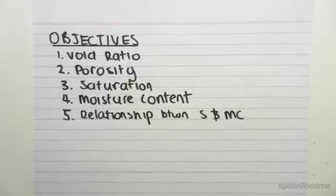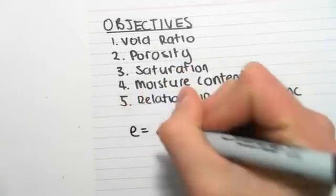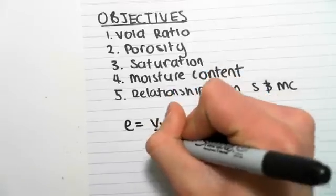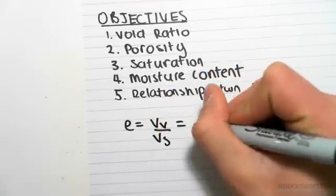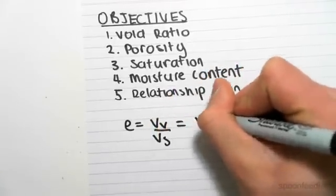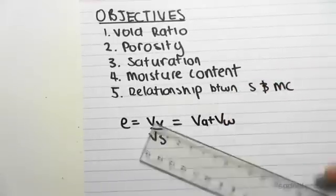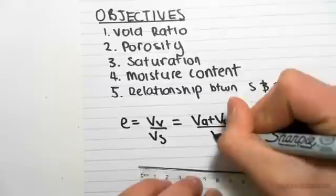So first up, the void ratio. The void ratio is given by the symbol E, where E equals the volume of the voids on the volume of the solids, which you can rewrite because we know the volume of the voids is the volume of the air plus the volume of the water. That's still over the volume of the solids.